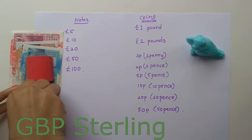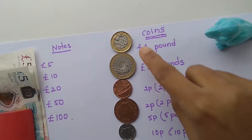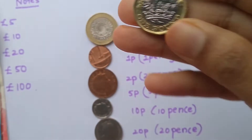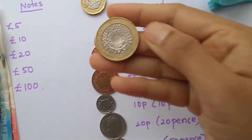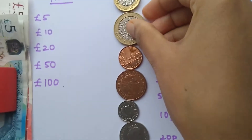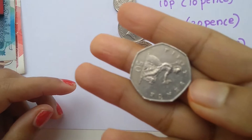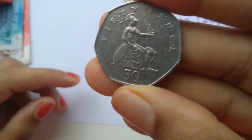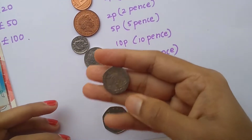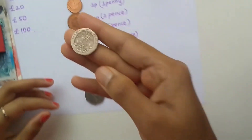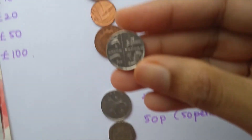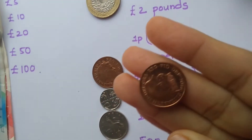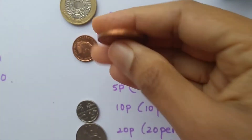Let's get started. The UK currency is 1 pound. We have 2 rupees, 50 pence coins, 25 pence coins, 10 pence coins, 5 pence, 1 pence, and 2 pence coins.